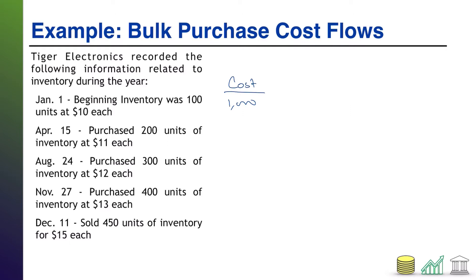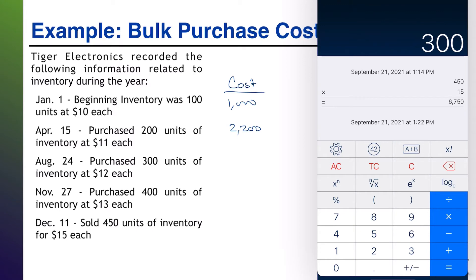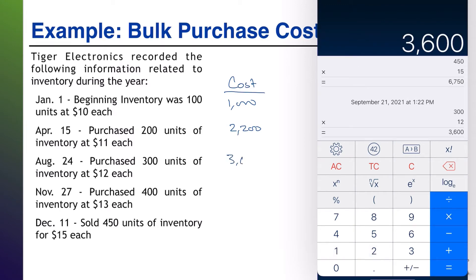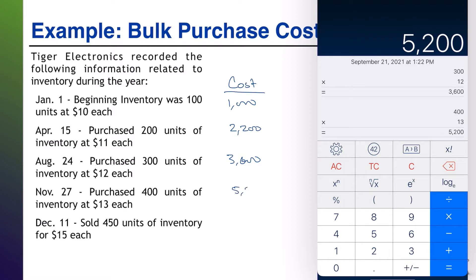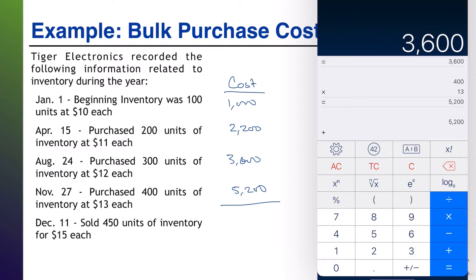We can do the same for the three subsequent purchases. We purchased 200 units at $11 each — a cost of $2,200. We purchased 300 units at $12 each — $3,600. We purchased 400 units at $13 each — $5,200. The beginning inventory balance plus the cost of goods purchased gives us the cost of goods available for sale: $5,200 + $3,600 + $2,200 + $1,000 = $12,000 total.